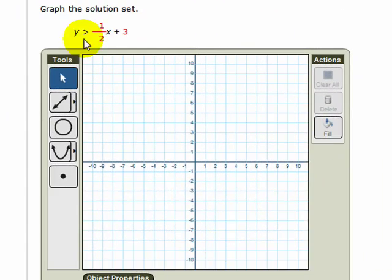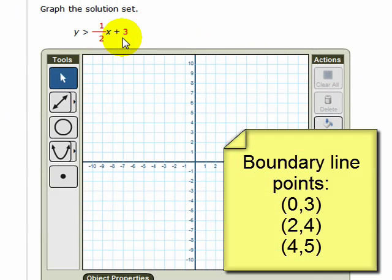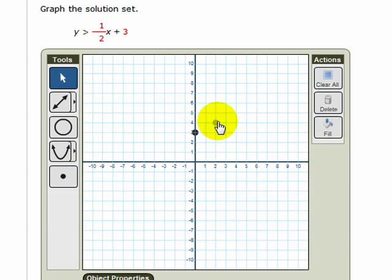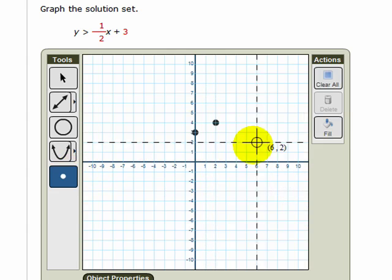Suppose we choose to graph this using a slightly different method. In this case, plotting some points first at 0, 3, 2, 4, and 4, 5.